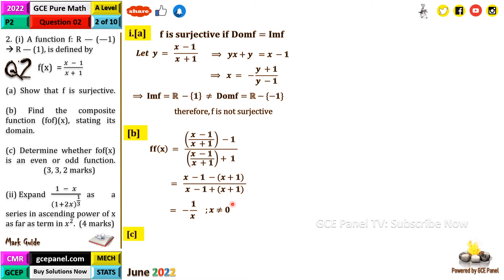Part (c): determine whether f∘f(x) is an even or odd function. The function is even if f∘f(−x) = f∘f(x), and it is odd if f∘f(−x) = −f∘f(x). Please listen carefully and don't miss these definitions.